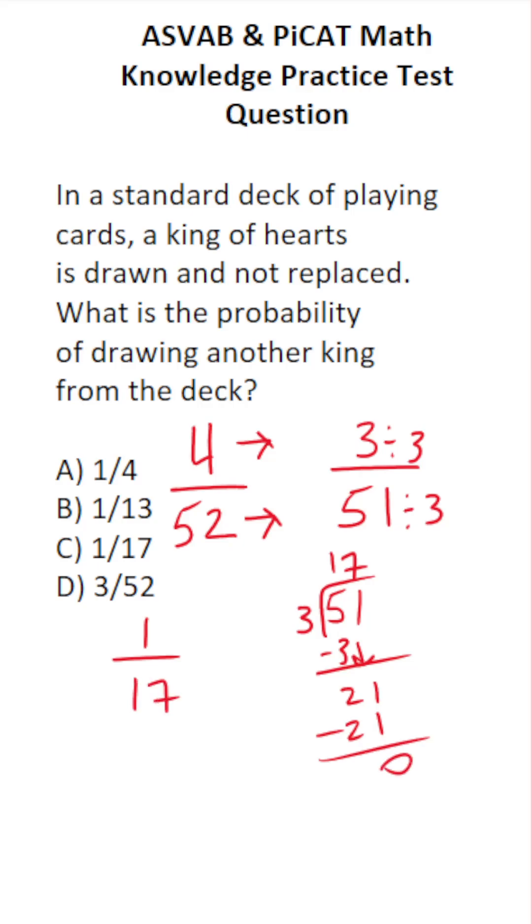So this is one over 17. Your odds of drawing another king from the deck, which had one removed previously, is C, one over 17.